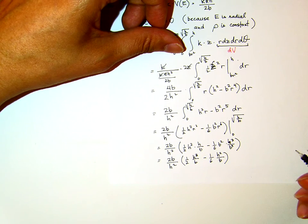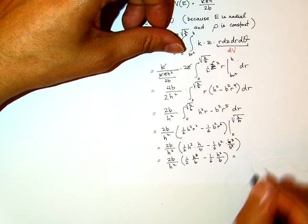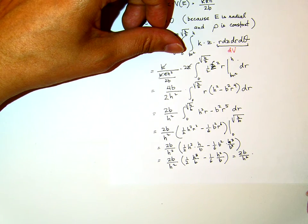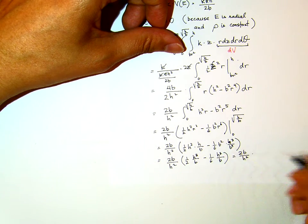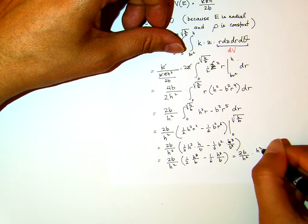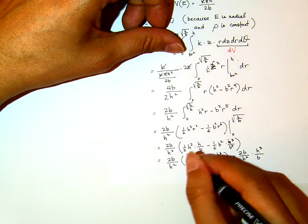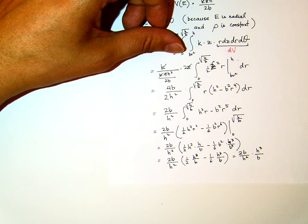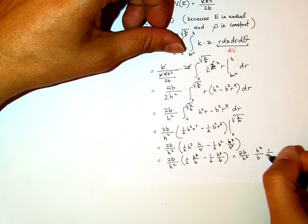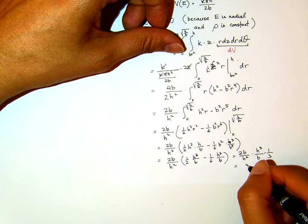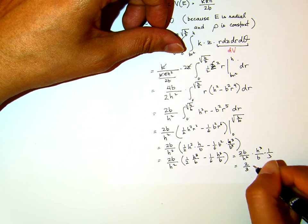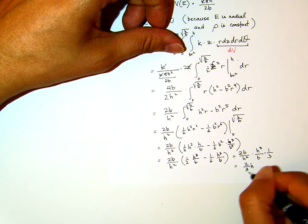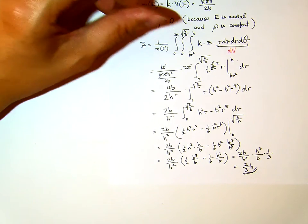You see, something simplified very nicely. Outside, I still have 2B over H squared. Do you notice that I can factorize H cubed over B out, and inside, 1 half minus 1 6th. I hope you can see that's actually 1 third. This will then be 2 over 3 H.